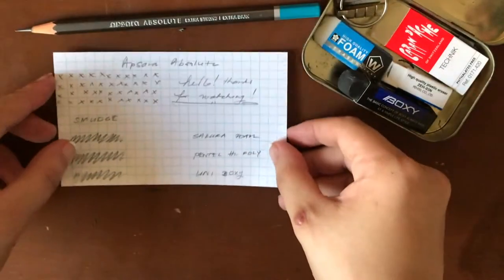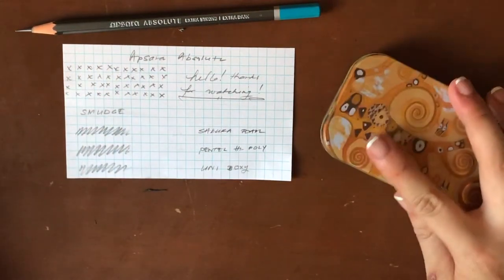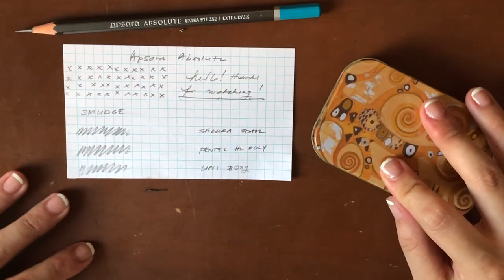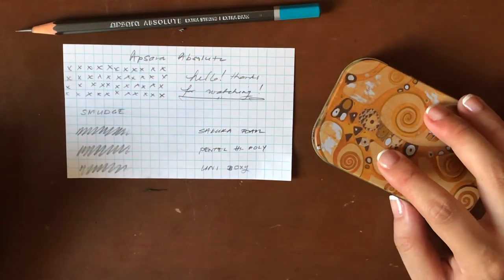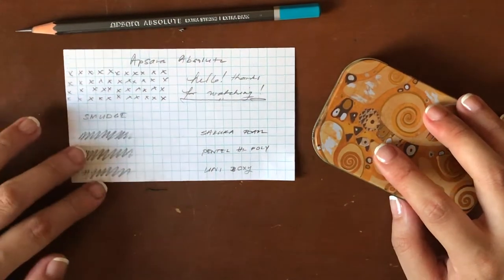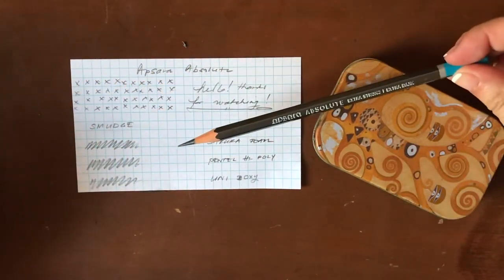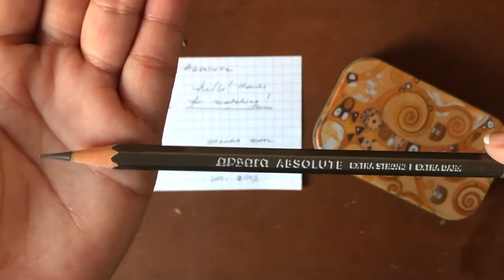So overall, this pencil, especially with the point retention, hits all of the happy points for me when I'm looking for something that's retention-wise very good, that's dark and that is low maintenance because I barely have to sharpen it. Look, we just did this whole card with it and the point has barely changed. Point retention is definitely a winner for me with the Apsura.